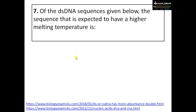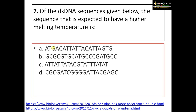Question number seven: of the double-stranded DNA sequences given, which is expected to have a higher melting temperature? Melting temperature is the temperature at which half the sample is denatured into single strands. Guanine-cytosine base pairs have three hydrogen bonds, giving higher melting temperature compared to adenine-thymine pairs which have only two hydrogen bonds. Pick the sequence with maximum GC content — that is option B.